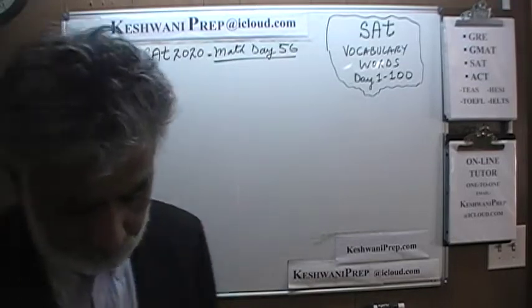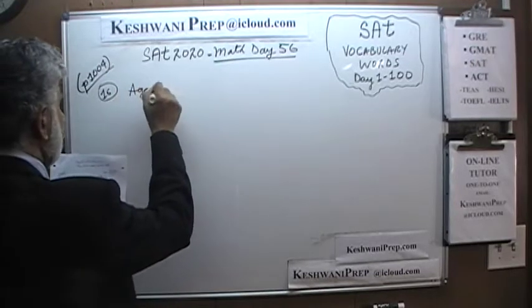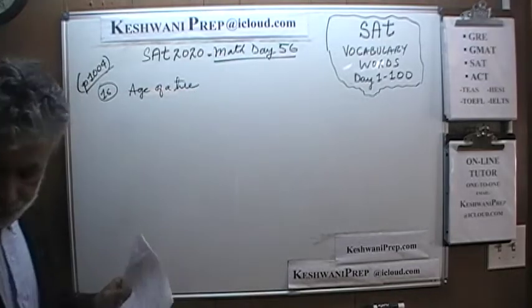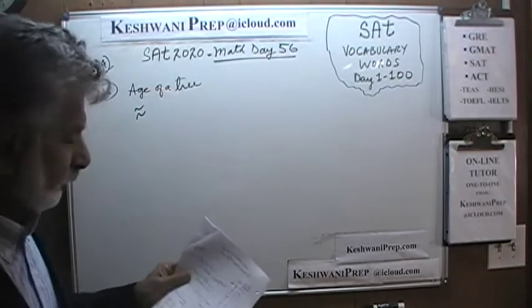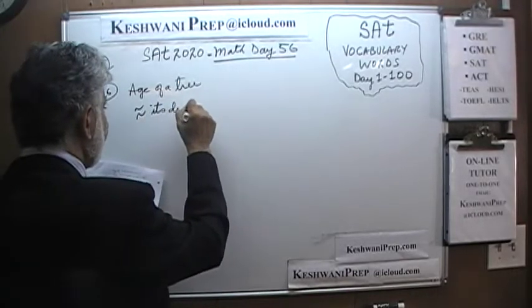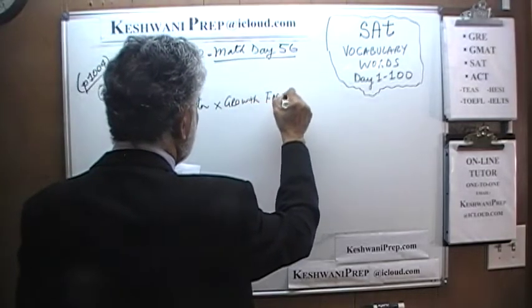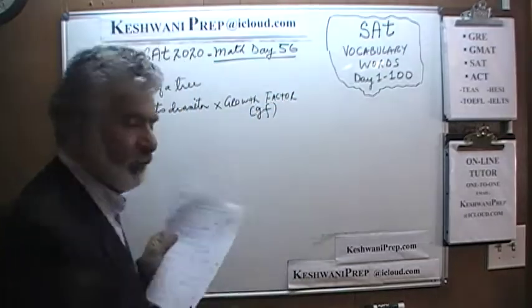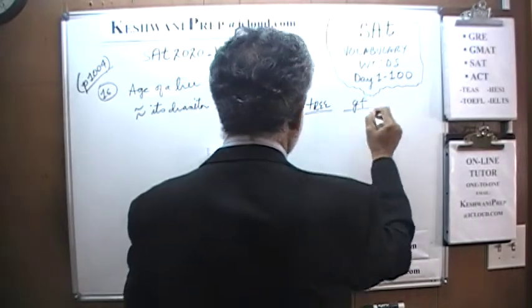We stopped yesterday at number 15, so we are going to pick up from number 16. Problems 16, 17, and 18 are all together — it is a triplet. In number 16, we are told that the age of a tree is approximately equal to its diameter times what they are calling the growth factor. The diameter is in inches. They give us a table here with different trees and their growth factors.